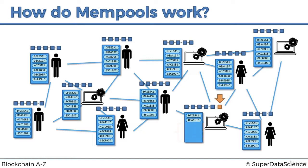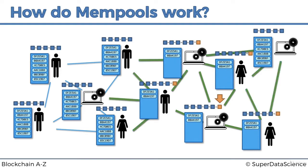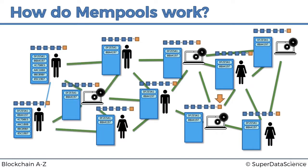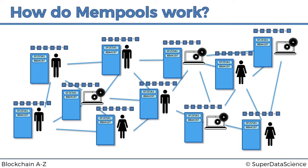Since the block has been mined, it's time to take these transactions out of the mempool. Those transactions get removed from the mempool because they're already in the block. Then that block gets relayed across the network, gets added to all the other nodes, and those same transactions get removed from their mempools - as long as the block passes the checks. So it gets added to all the nodes in the network, transactions get removed from every single mempool, and that block is now part of the network. The same process then happens again and again.